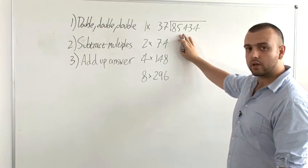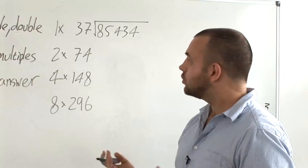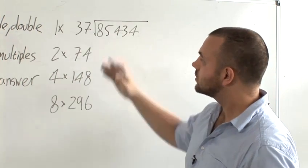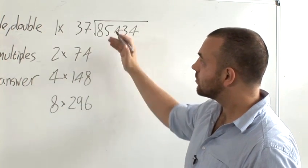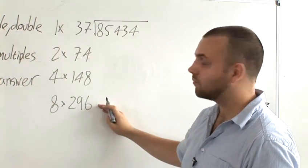Say we're wanting to do this quite complicated long division sum, 85,434 divided by 37. What you do is you subtract from the number you're trying to divide multiples of these numbers. These numbers are the divisor, doubled, then quadrupled, and then multiplied by 8.